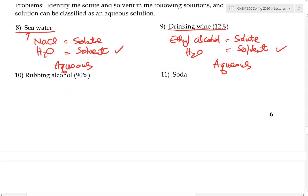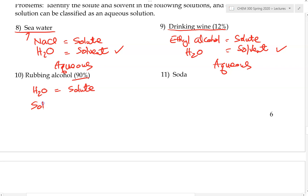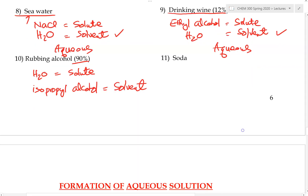Another example: rubbing alcohol. Rubbing alcohol is basically isopropanol mixed with water — it's actually 90% isopropyl alcohol. So water is only 10%, making water the component present in the smaller amount — water is the solute. The solvent is isopropyl alcohol. Can we call this an aqueous solution? No — because the solvent is not water, so this is not an aqueous solution.